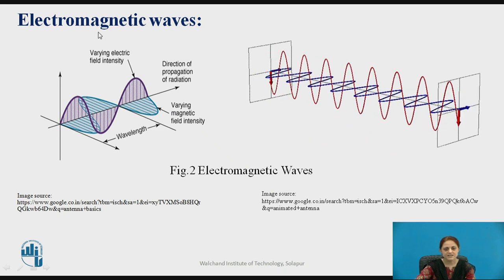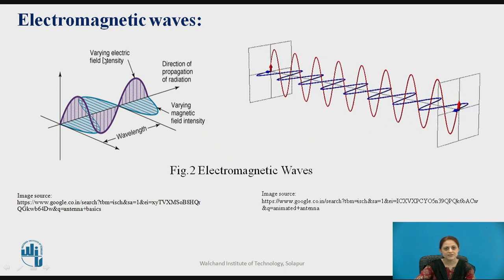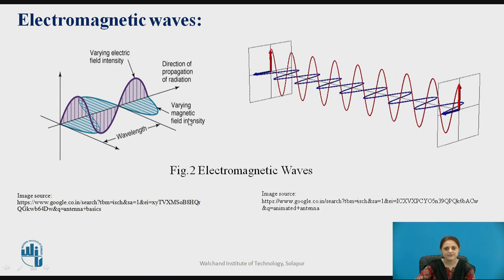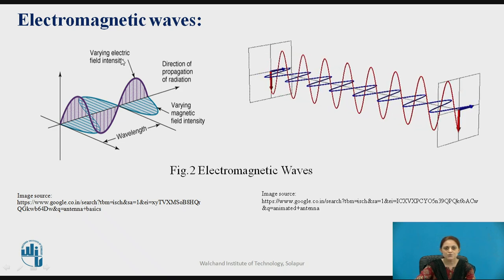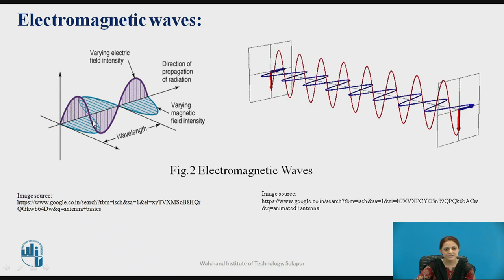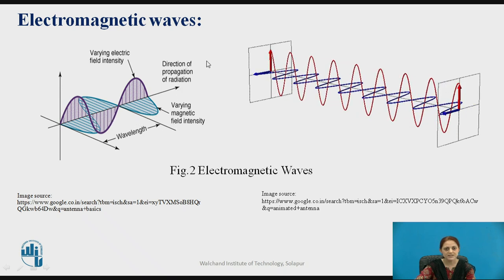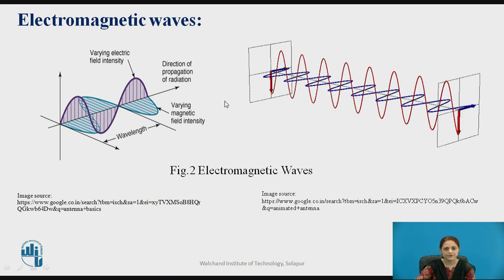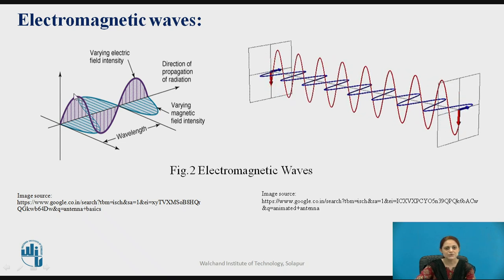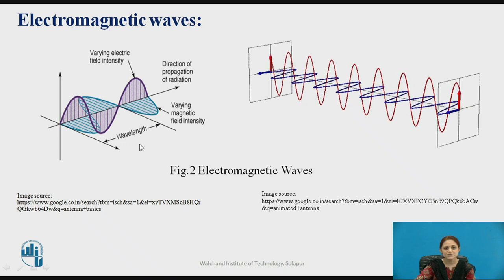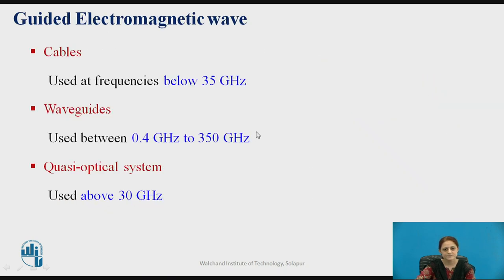The electromagnetic waves have electric field intensity and magnetic field intensity. These two fields are varying fields and the wave is perpendicular to the direction of propagation. The distance between two successive crests or troughs is known as the wavelength. Electromagnetic waves can be defined in two ways: guided waves and unguided waves. Guided waves are defined by cables, waveguides, and quasi-optical systems.